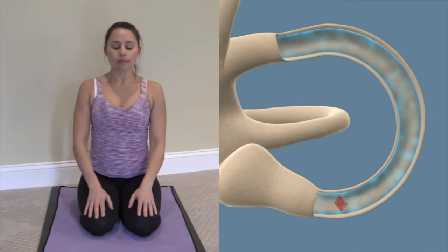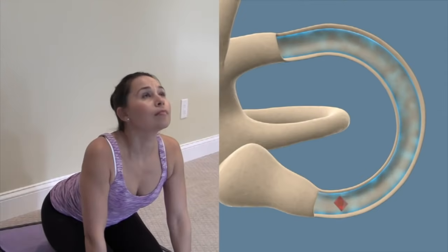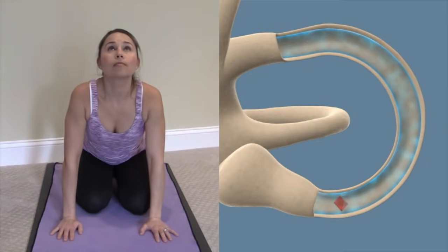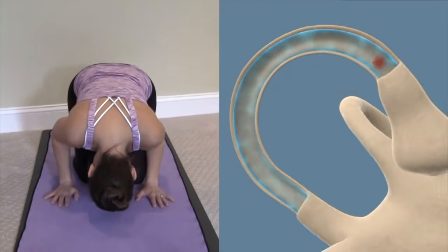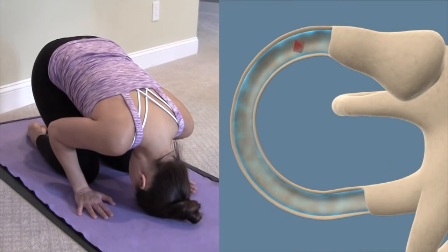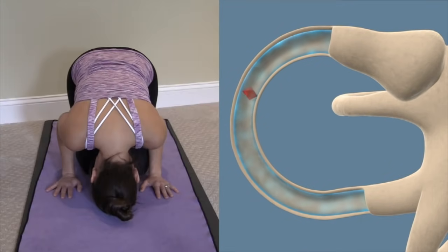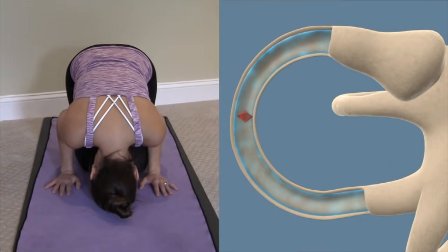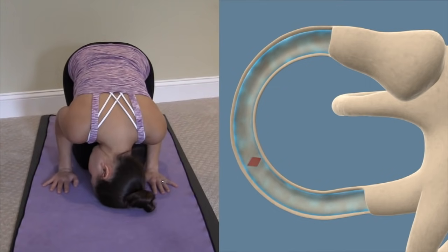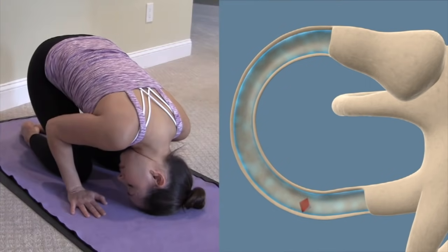Essentially, the head is moved in such a way to manipulate the crystal to fall toward the canal opening. With each position change, it takes about 30 to 60 seconds for the crystal to settle into the most dependent position in the canal. If turns are made before the crystal has a chance to settle, the crystal may fall back the wrong way and the maneuver will fail.